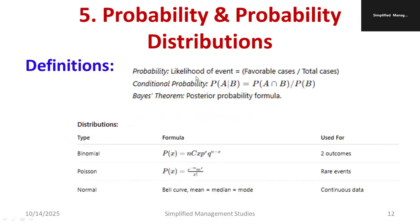Probability is the likelihood of events: favorable cases divided by total number of cases. Conditional probability of A given B is P(A∩B) / P(B). Bayes' theorem gives posterior probability. The binomial distribution formula applies when there are two outcomes. Poisson distribution formula is P = e^(−m) × m^x / x!, used for rare events, such as the number of accidents occurring in air travel.